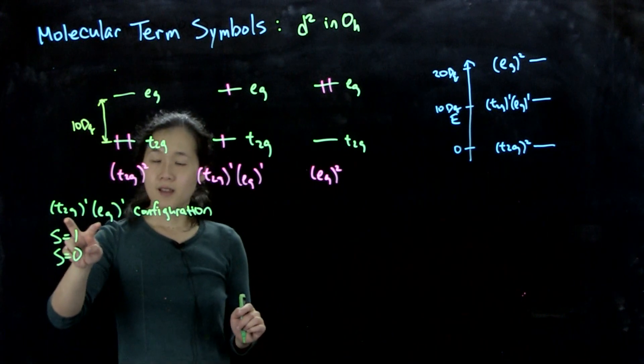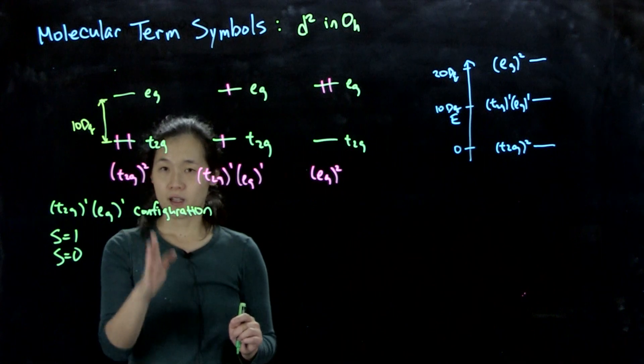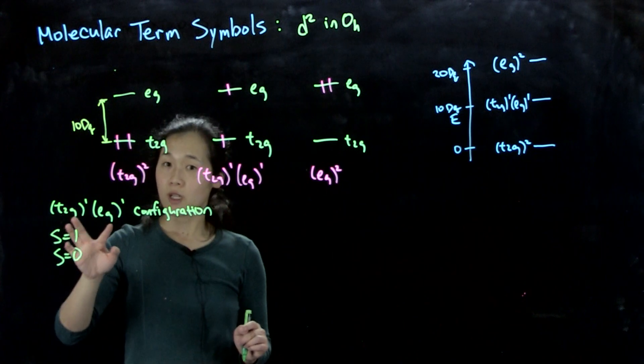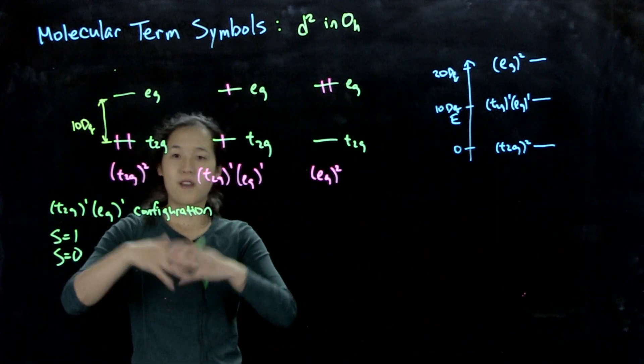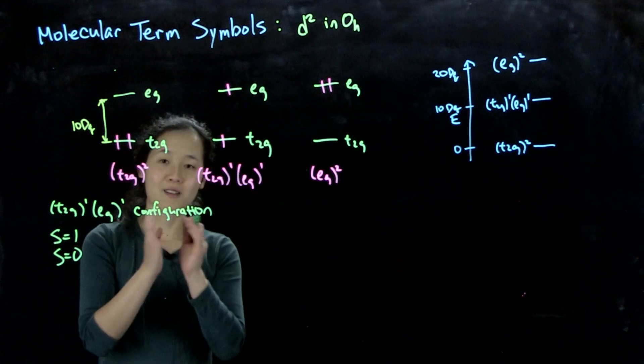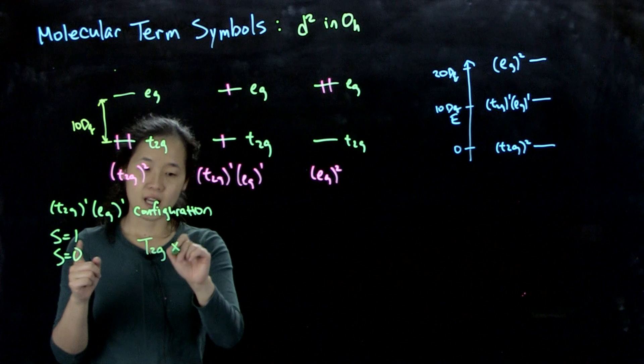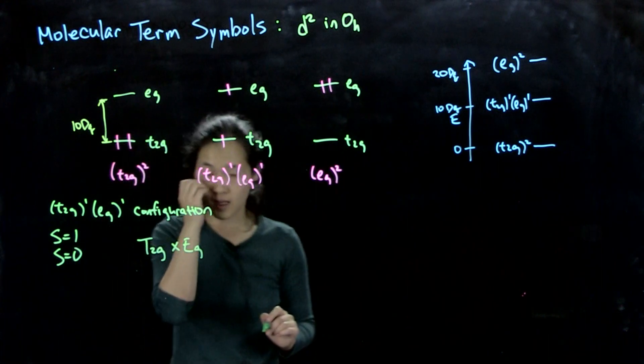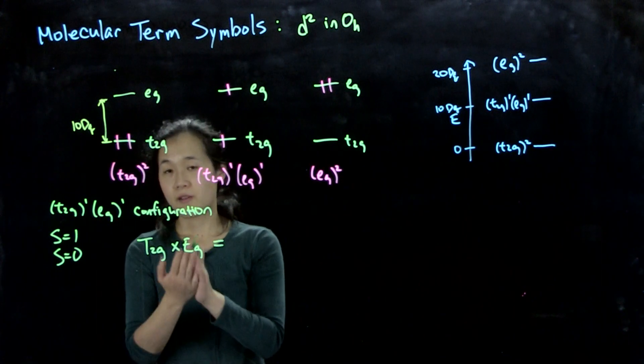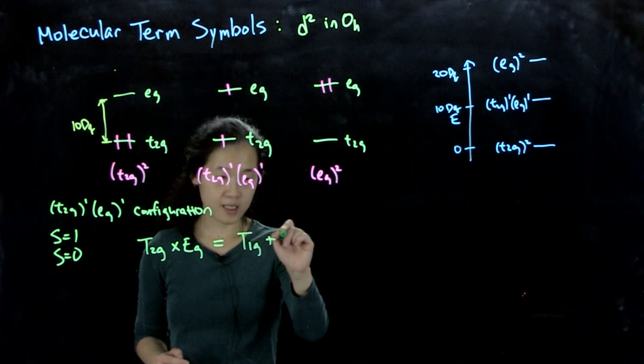For our possible orbital states, what we want to do now is we know before when we have one electron configuration that the orbital symmetry of that electron is going to be the same as the symmetry of the orbitals that it's in. But now we have two electrons, so we want to find the overall wave functions that we can get out. So here we can then do the direct products that we did before in class. So what we'll take is our t2g orbitals times eG orbitals.